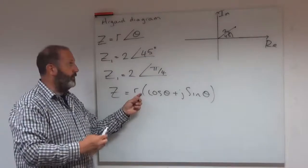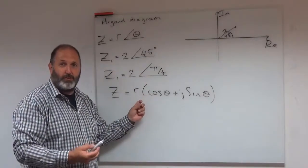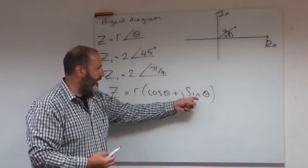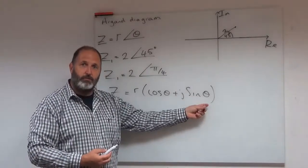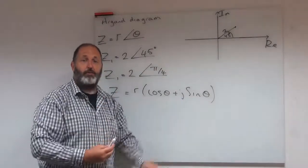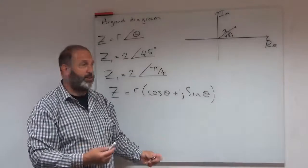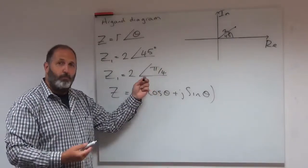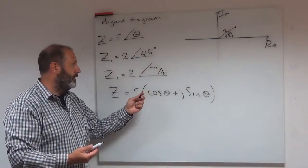You have to know r, you have to know the length of the line, the distance from the origin. And you have to know the angle, theta. How far have we gone anti-clockwise? Is it 20 degrees? Is it 45? Is it pi over 4 radians?